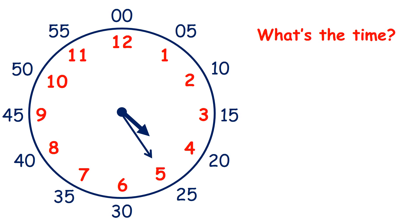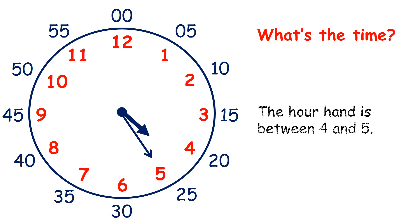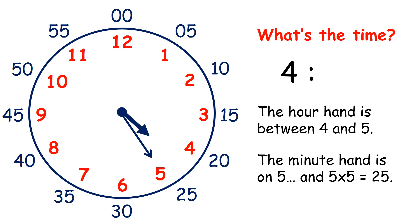So what time does this clock show? The hour hand is between 4 and 5, so it's 4 something. And the minute hand is on 5, and 5 times 5 is 25, so the time here is 4:25.